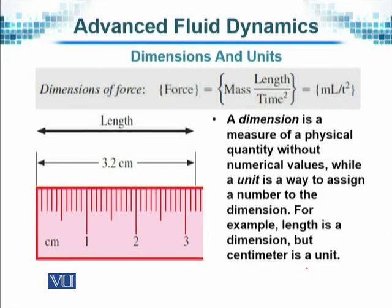For example, the distance between two points which are 3.2 centimeters apart — this is a length. It has a dimension of length. We don't say 3.2 is the distance; but if somebody asks what is its dimension, its dimension is only length. So this is the difference.